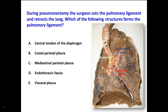Now I'm going to draw a green line representing the mediastinal parietal pleura, and at the lower part of the root of the lung there will be a double folding of the mediastinal pleura, which will form the pulmonary ligament. So the pulmonary ligament is related to the lower part of the root of the lung — it's like a cuff of a sleeve, a double fold of parietal mediastinal pleura.